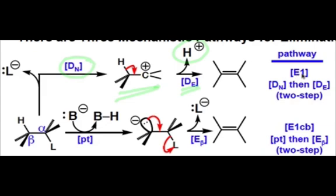This pathway is called the E1 pathway, because the slow step dissociation of the leaving group from the starting material is unimolecular.